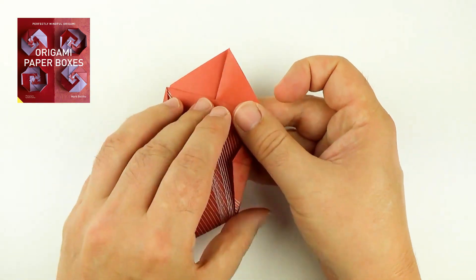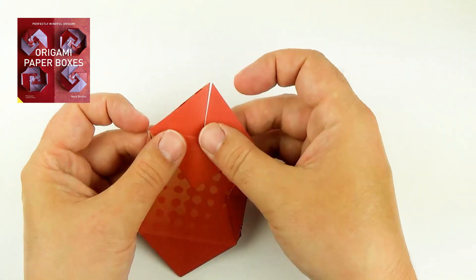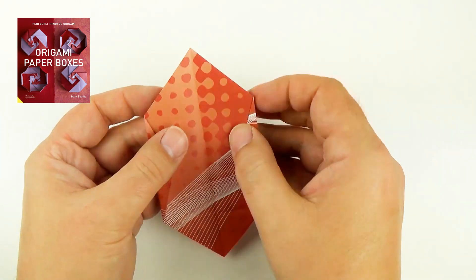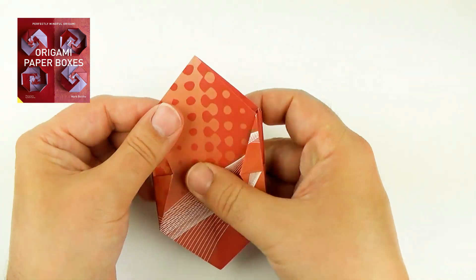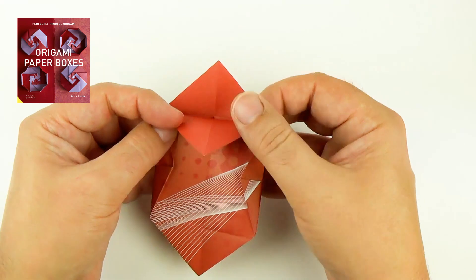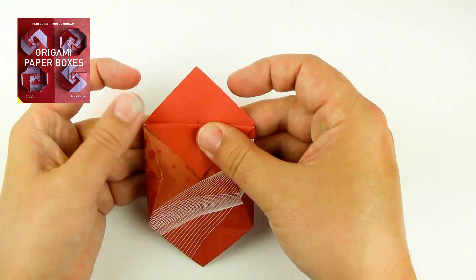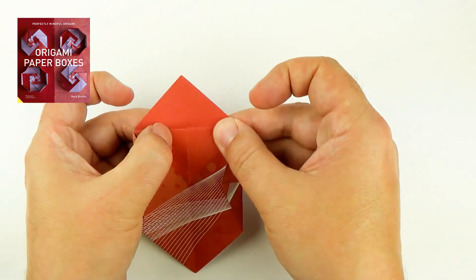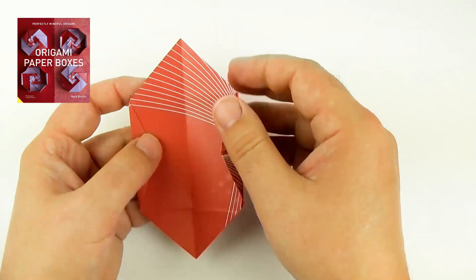Now I'm going to fold this over. Same on the back. And flip it up the other way. Fold the corner over again. And behind.